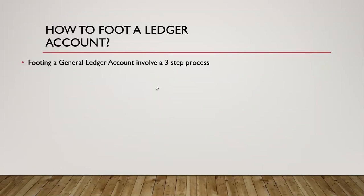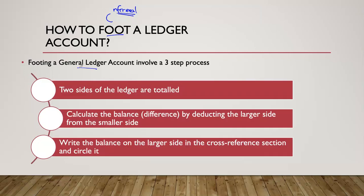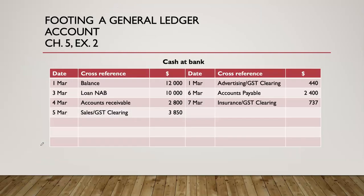We use the trial balance to work out the balance at the end of each month, but how do we come up with those balances? There are two ways. The first — and less likely to be examined — is called footing: an informal method of balancing. Footing a general ledger account involves a three-step process: first, total both sides of the ledger; second, calculate the balance by deducting the larger side from the smaller side; then write the balance on the larger side in the cross-reference section and circle it.